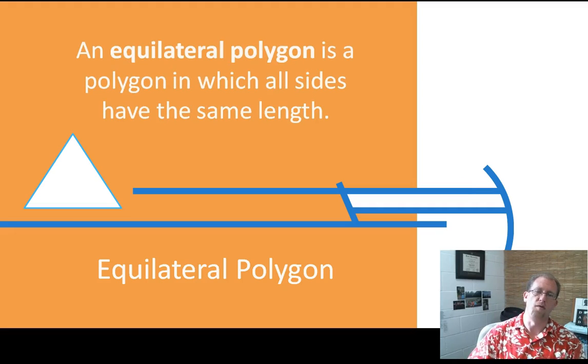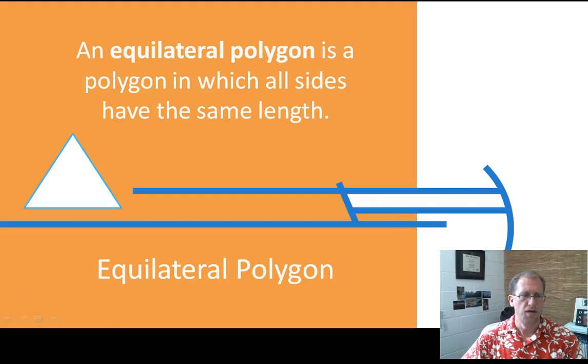Equilateral polygons are polygons whose sides are all the same length. So the poster child for an equilateral polygon is this equilateral triangle. All three sides are the same length, and so it is equilateral. We also use the word regular. Regular means that it is equilateral and equangular, which is the next slide. So you could say equilateral or you could say regular. This is a regular triangle. There are regular quadrilaterals, which would be squares. There are regular pentagons, heptagons, etc.